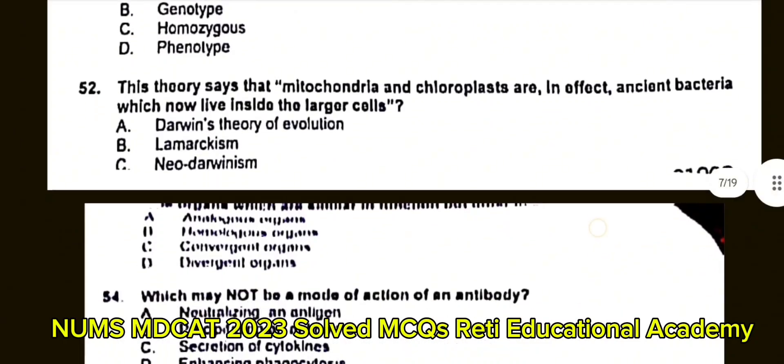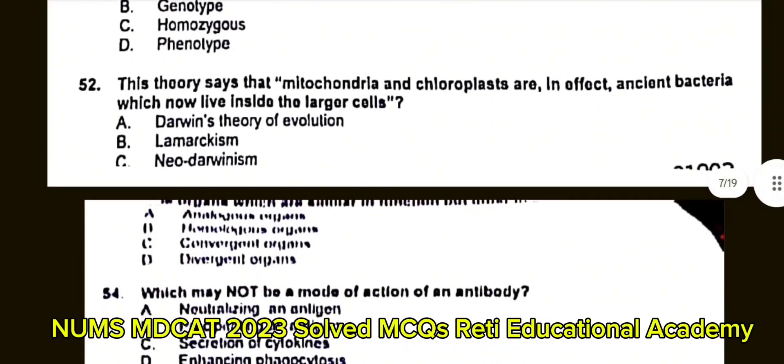Question number 53: The organs which are similar in function but differ in structure are called? A. Analogous organs. B. Homologous organs. C. Convergent organs. D. Divergent organs. The correct answer is A: Analogous organs.